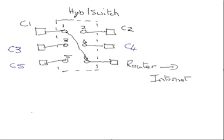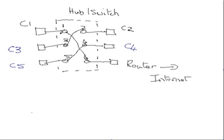Now contrast that to the device when it functions as a switch, with the same scenario: computer one talking to the router on port six. Because it's a switch, the connection is only between port one and six — it's not between port one and port two, or port one and port four, just between one and six. So the other computers are actually free to talk to each other. They still can't talk to the router, and they can't talk to computer one because computer one is talking to the router, but they can communicate with each other. So it's possible to have a connection between computer three and computer two, and computer four and computer five. It's possible to have three simultaneous connections through this device if it's functioning as a switch, whereas we can only have one connection if it's functioning as a hub.